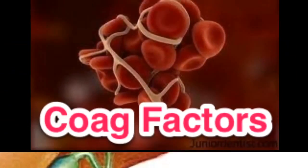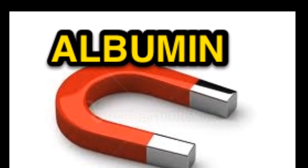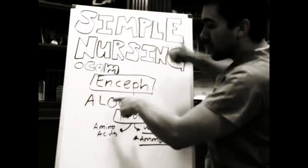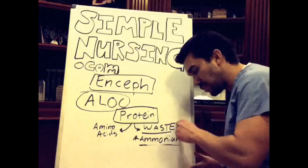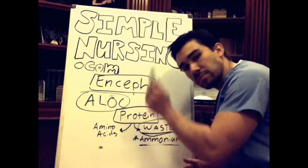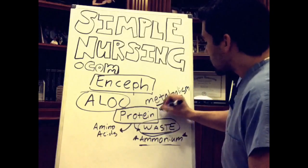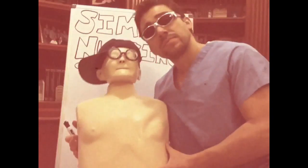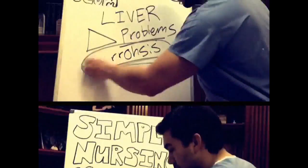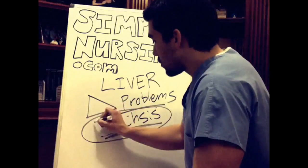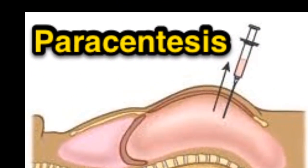producing clotting factors and albumin. It's beginning to look a lot like encephalopathy with altered LOC. Too much ammonia in the blood — a byproduct of protein metabolism. Give lactulose to aid the excretion.